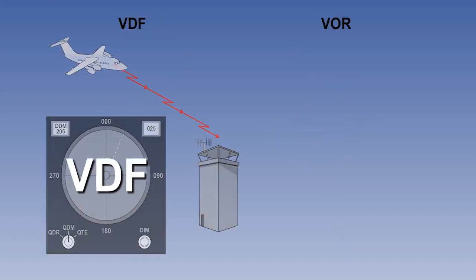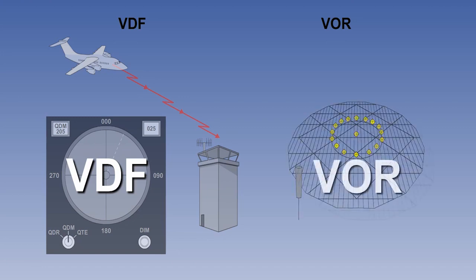Whether you need to apply a correction for chart convergence depends on whether the bearing is measured at the ground station or at the aircraft.